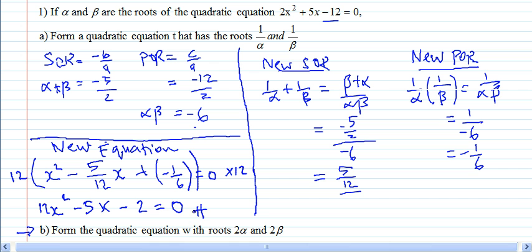So that's your new quadratic equation with the root 1 over alpha and 1 over beta. You notice that you do not have to separately find the alpha and beta, which means you don't have to find the roots. What you can do now is try question B, form the quadratic equation with the roots 2 alpha and 2 beta, and I'll see you at the next video.